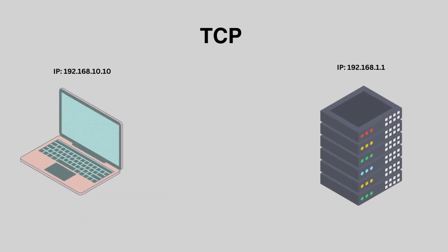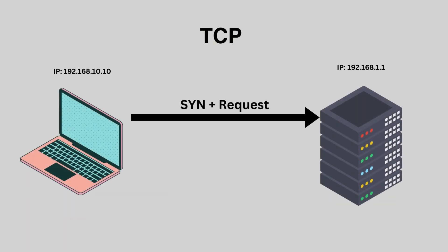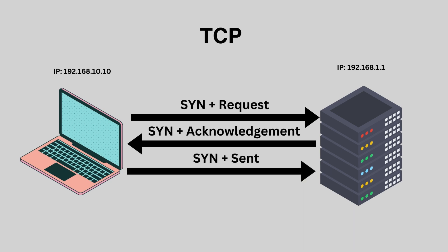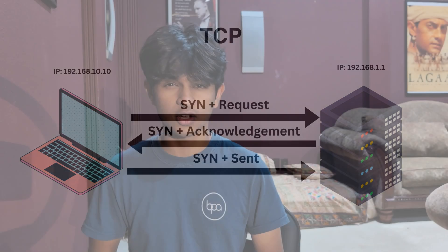It achieves this by having a three-way handshake, in which the sender first sends a SYN request to establish communication with the server. Then the receiver sends a SYN acknowledgement packet back. Finally, the sender sends back an acknowledgement request, allowing for data transmission to begin.